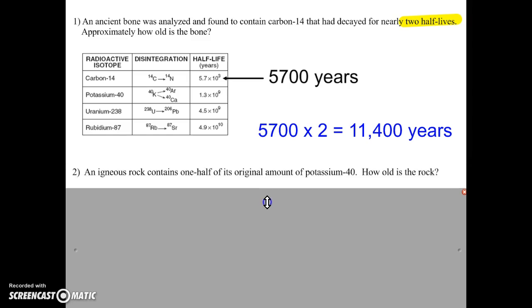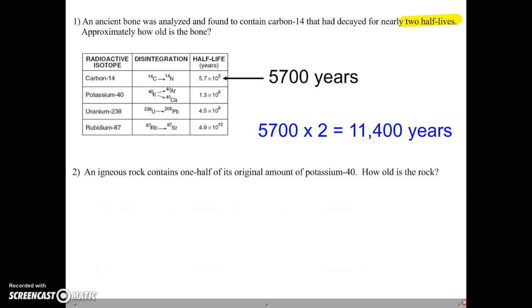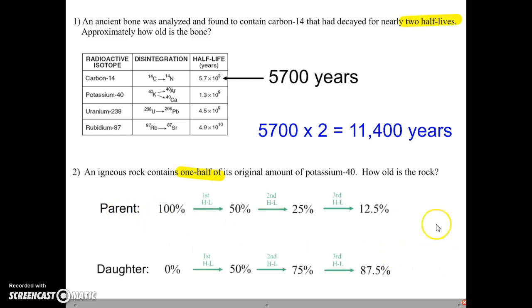Okay, let's look at a second problem. An igneous rock contains one-half of its original amount of potassium-40. How old is the rock? Okay, so they're telling us that this rock contains one-half of what it originally had. So we're going to refer back to that chart that we looked at before. This chart will help you with any of these questions. My advice is to always draw this out on your paper and then use it for as many questions as you need to. So the rock has 50% of its potassium-40. So we know we started off with 100%. And if I'm left with 50%, that means it only went through one half-life. So for potassium-40, one half-life is 1.3 billion years. So that's how old this rock would be.